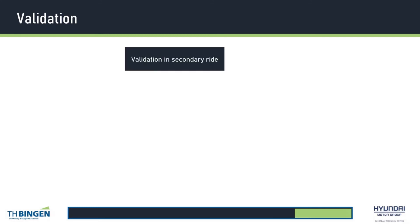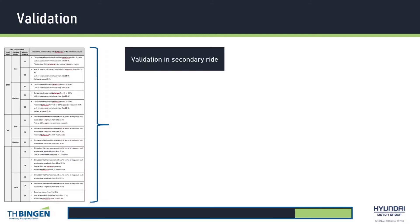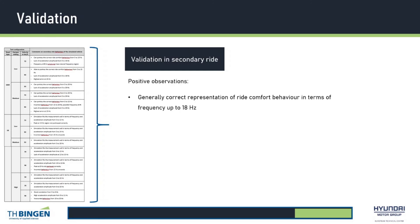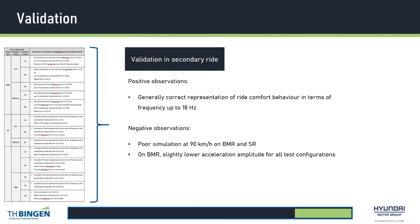For the secondary ride region, since this represents a larger frequency spectrum and is affected by multiple vehicle components which often overlap, the validation process was more subjective. Observations from the comparison diagrams were recorded in a table, noting both positive and negative points. A positive observation is that generally the simulation portrays correct ride comfort behavior up to 18 Hz. However, simulation of tests at 90 km/h on both badly maintained road and smooth road correlates poorly with the real measurement. On badly maintained road, the simulated acceleration amplitude is slightly lower than the measured amplitude in all cases, which again might be related to slight inaccuracy in mass parameterization.